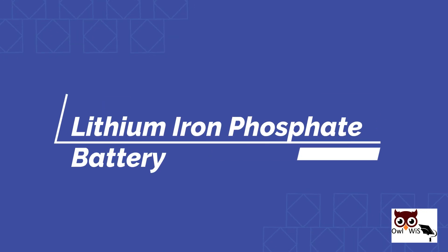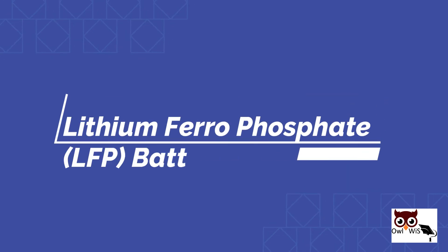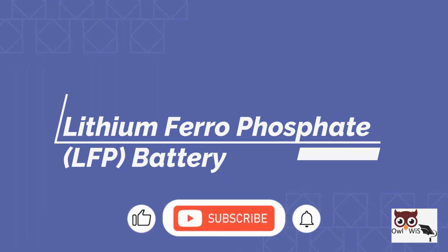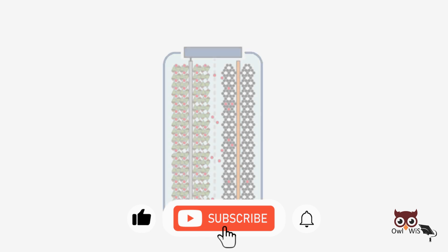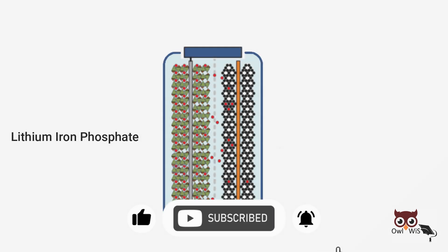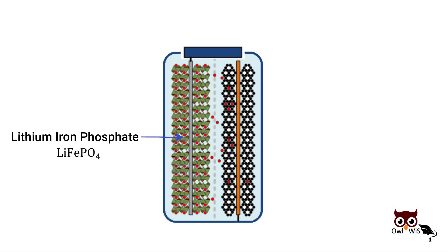Lithium iron phosphate, or lithium ferro phosphate, is a type of lithium-ion battery. LFP batteries use lithium iron phosphate as a cathode material, which is connected by aluminum foil to the positive electrode of the battery.